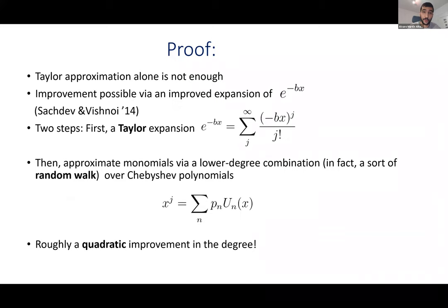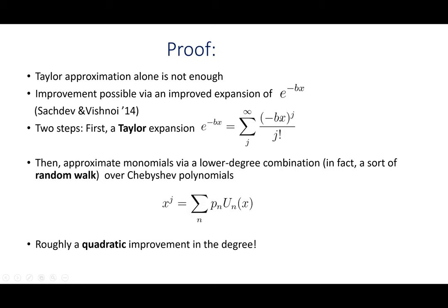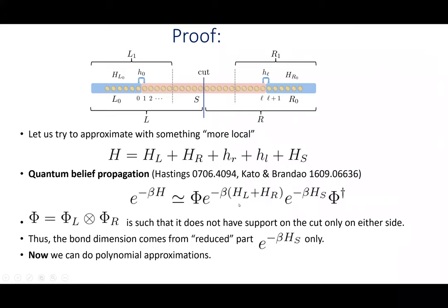A question: are you assuming only locality for the Hamiltonian? So far, the Hamiltonian doesn't have to be translation invariant — only locality is assumed. The only thing I need is locality of the Hamiltonian, basically to ensure that the relevant operator here is local. Also, the left and right Hamiltonians H_L and H_R commute with H_S because we're taking out the interaction part.